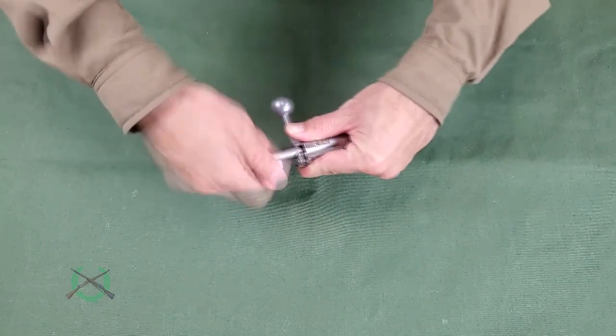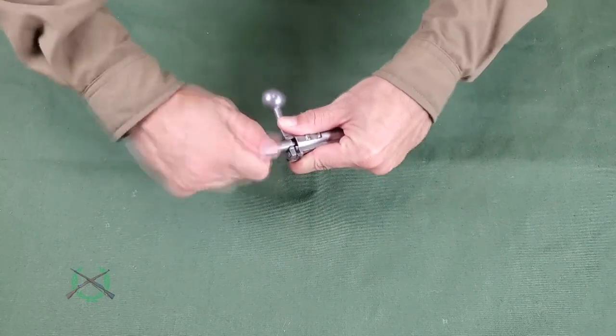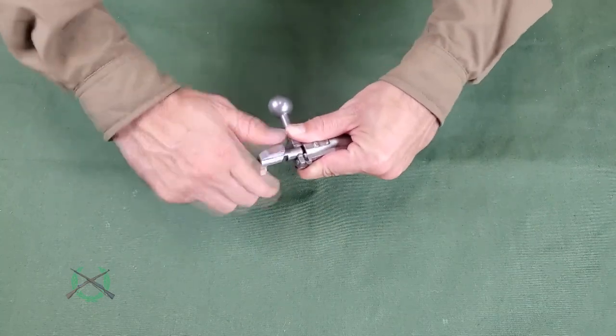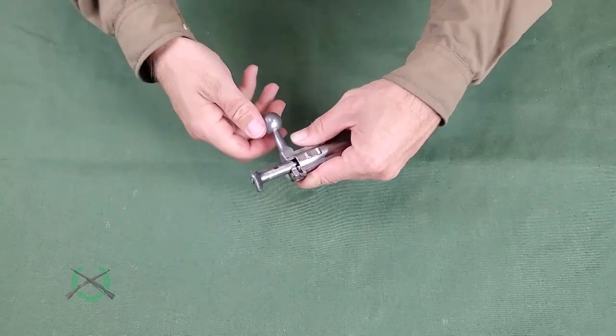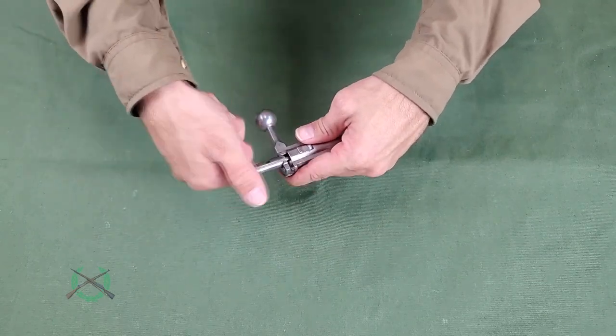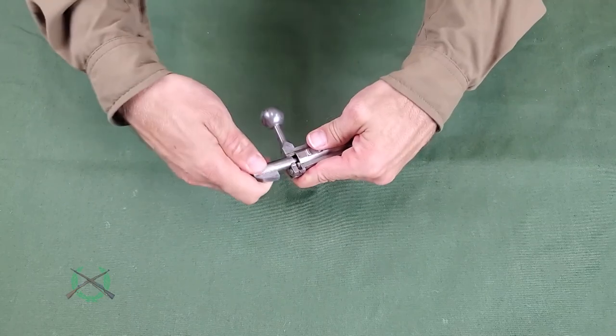Continue rotating the cocking piece clockwise until it is fully screwed onto the firing pin. Rotate the cocking piece counterclockwise until it snaps into position with the sear oriented to the bottom of the bolt body.